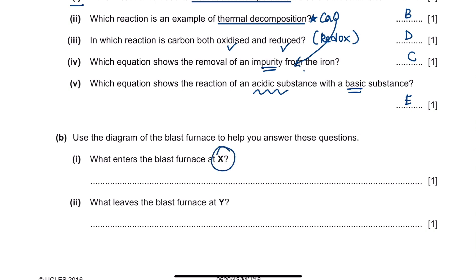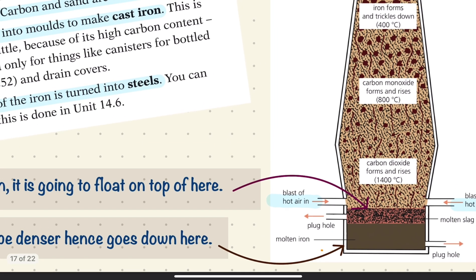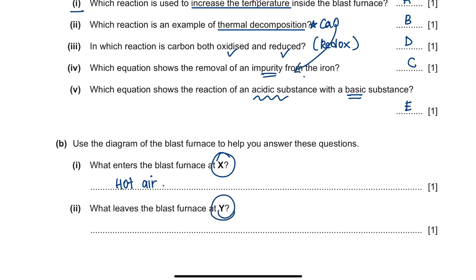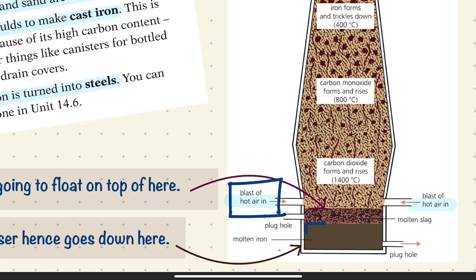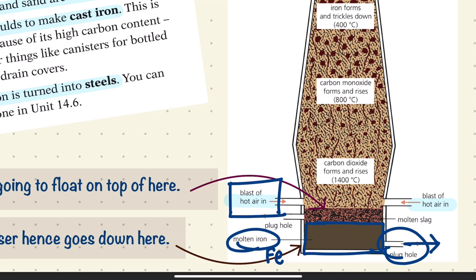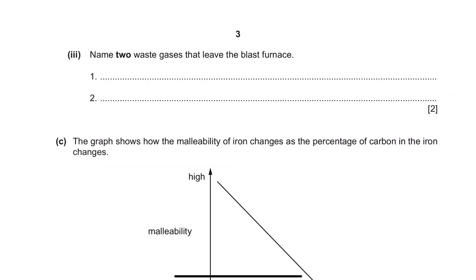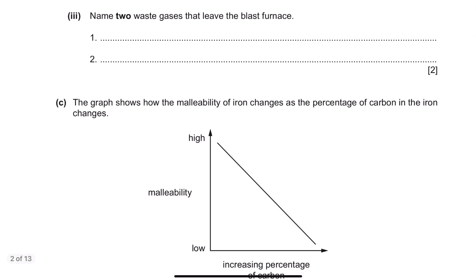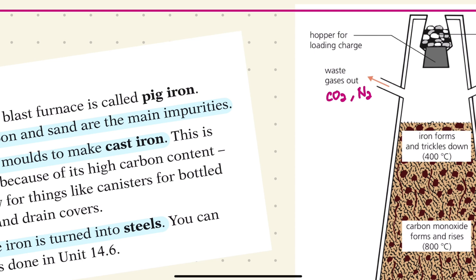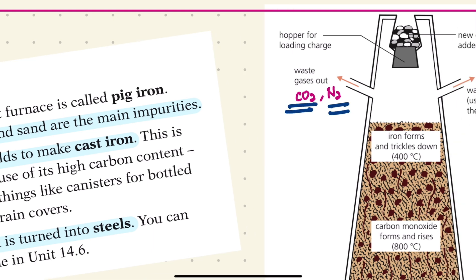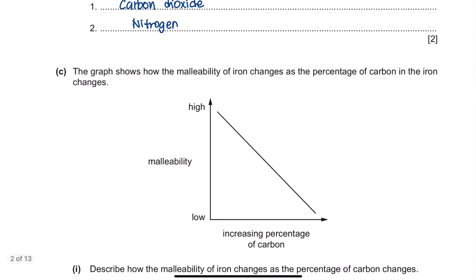The next question uses the diagram of the blast furnace. What enters the blast furnace at X? As noted, what enters is hot air. What leaves the blast furnace at Y? At the bottom, molten iron comes out — the iron you wanted to extract. Two waste gases that leave the blast furnace are carbon dioxide and nitrogen gas.